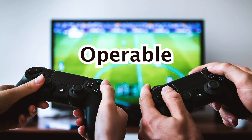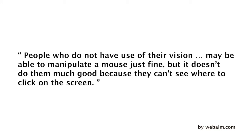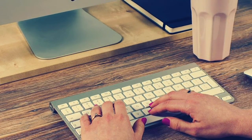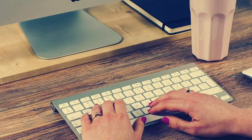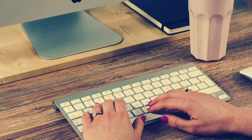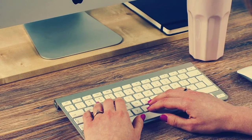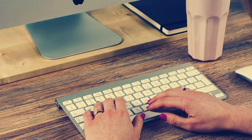O for Operable: we need to give users the ability to successfully control the interface. For example, you can't make an exclusive function that works only with a mouse, because some people can't use or have access to a mouse. People without vision may be able to manipulate a mouse just fine, but it doesn't do them much good because they can't see where to click. WebAIM says keyboard accessibility is one of the most important principles of web accessibility, because content accessible to the keyboard is operable by any device that emulates keyboard functionality.